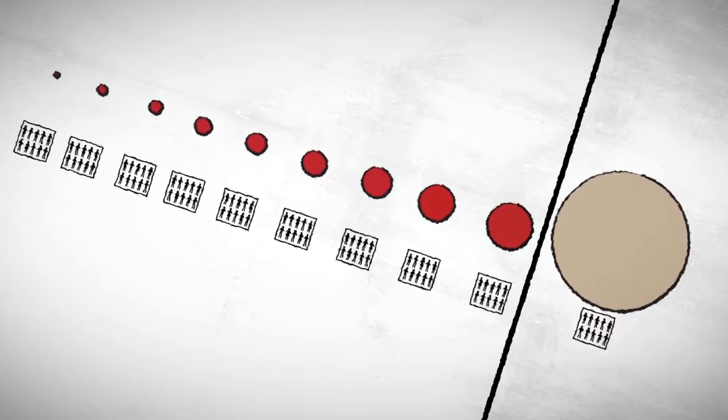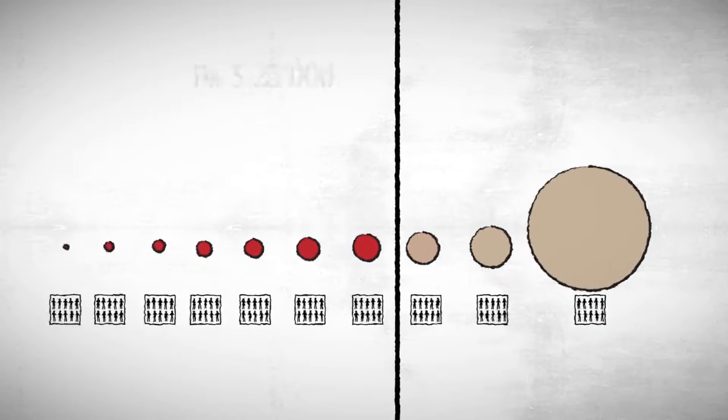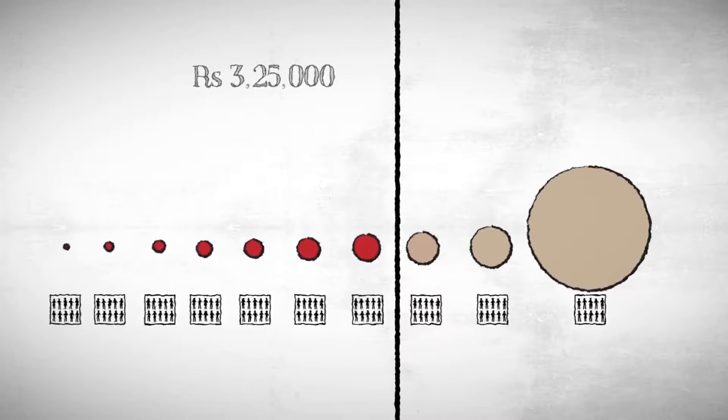That means 90% of the families do not own what should have been the average. Forget about 9 lakhs. Almost 70% of families don't even own 3,25,000 worth of wealth and property.